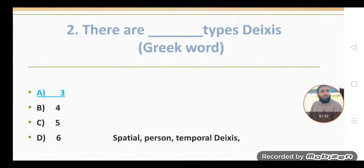Number two: There are blank types of deixis. There are three types of deixis. Option A is the correct option. In option B there was four, five, and six. But the correct option is A. There are three types of deixis. Dear students, these three types are spatial deixis, person or personal deixis, and temporal deixis.